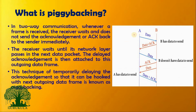Looking at this particular figure, we will understand the concept more clearly. A and B are considered as two systems, where A is trying to send data and B is also having some data to transfer. So instead of sending acknowledgement separately and data separately, B delays its transmission for a few seconds, and then the acknowledgement for the data sent from system A will be piggybacked with the data that B has to send. This is what we call a piggybacked frame.